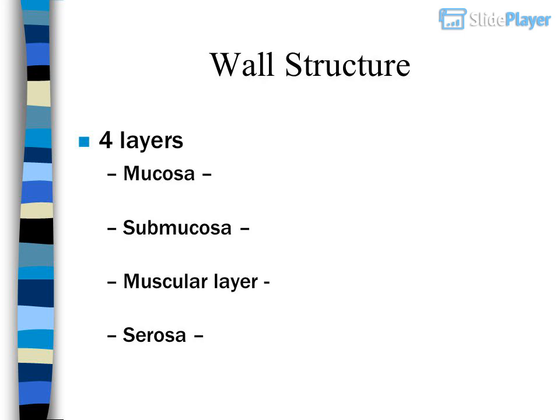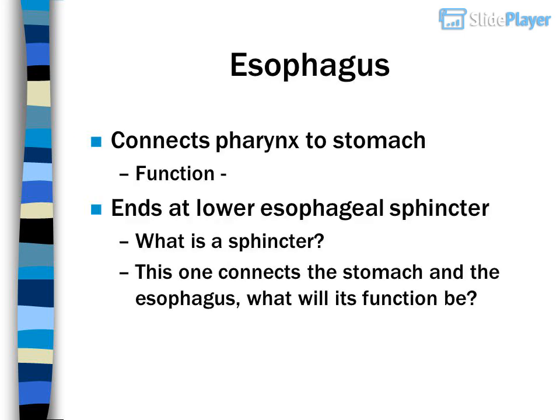The oropharynx attaches to the mouth, and the laryngopharynx attaches to the esophagus. Wall structure has four layers: mucosa, submucosa, muscular layer, and serosa. The esophagus connects the pharynx to the stomach.